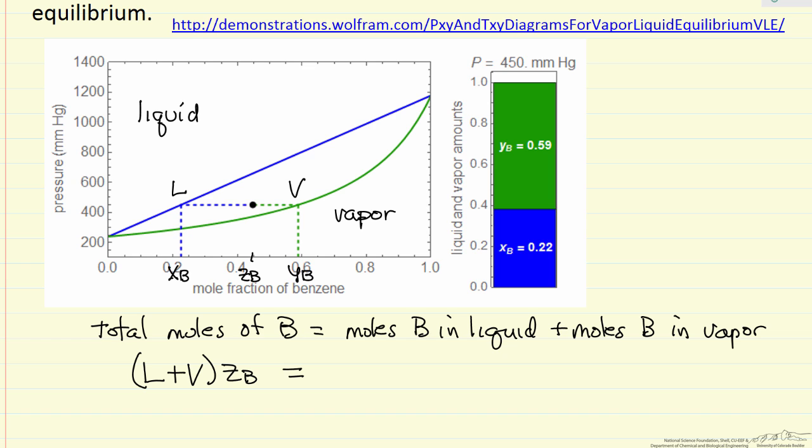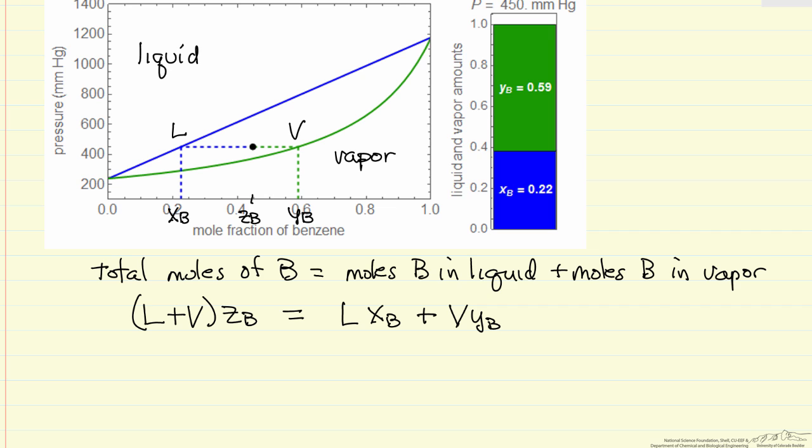The moles of B in the liquid phase, the number of moles of liquid times X sub B. Moles of B in the vapor phase, the number of moles of vapor times Y sub B. So all we have to do is rearrange this, and it'll look like the commonly used lever rule.